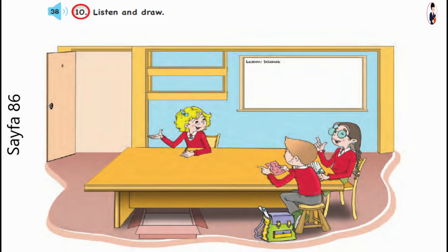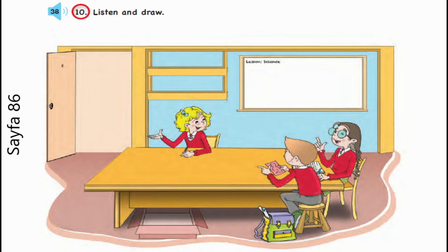Hi, everybody. I'm Kate. We are in the school lab. There is a lot of equipment here. The laptop is on the table. Can you see the goggles in front of the laptop? There are two glasses near the laptop. Test tubes are on the shelf — one, two, three, four test tubes. The magnifier is in the box, under the table. And where is the bottle? It's behind the laptop.